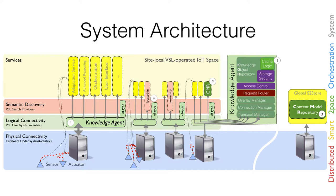On top we have the layer of services. This is where IoT devices are interfaced through adaptation or gateway services. You can also do advanced reasoning — taking data items and transforming them into other data items. You can do orchestration, controlling devices based on input. And you can have user interfaces, such as a smartphone app — for example, the Android app in the demo is one such user interface service.